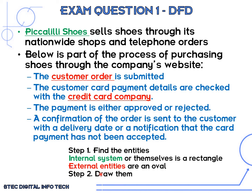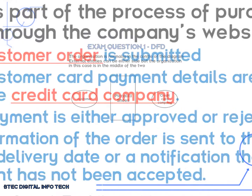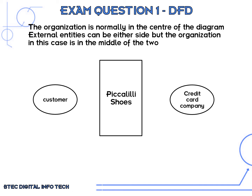An internal system uses a rectangle in a level zero data flow diagram, and external entities use an oval shape for customer and credit card company. So step two, we are going to draw those shapes. The organization is normally in the center of the diagram because it's easier to show other agencies or entities communicating with it — you can place them on either side to show any flow.